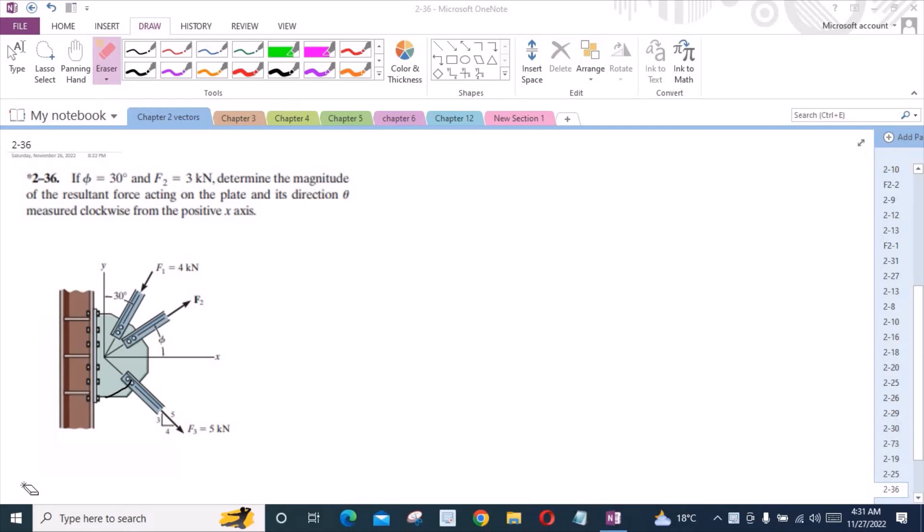To solve this problem, first of all, we have to resolve all the forces into their components. I have F1 force which is directed like this. Now, this force has one horizontal component and one vertical component. This is F1 sin 30 degrees and this is F1 cos 30 degrees.